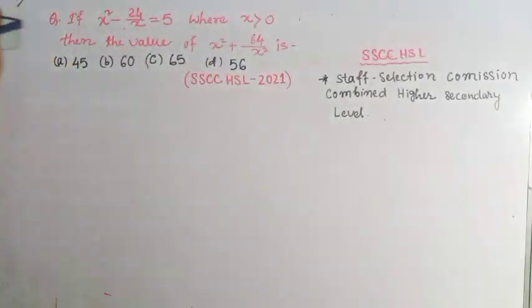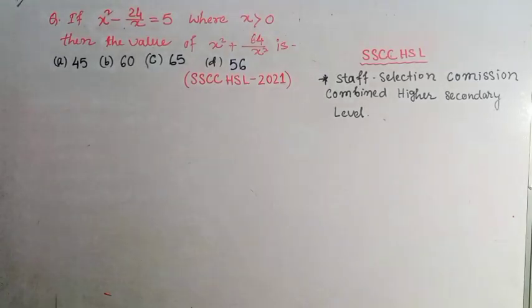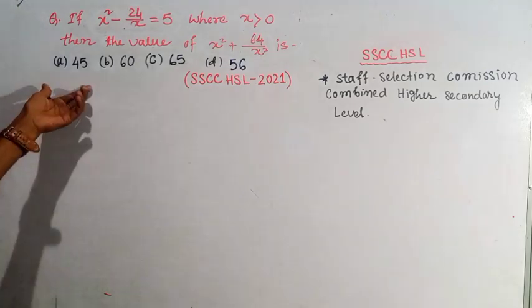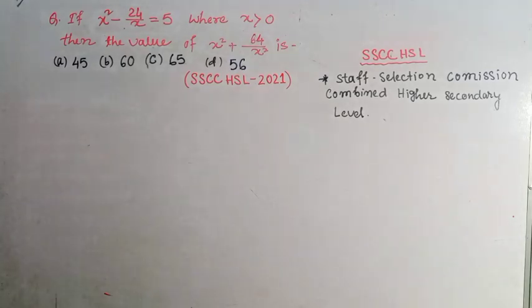So question 2 is: if x² minus 24/x equals 5, where x is greater than 0, then the value of x² plus 64/x² is? Options: A 45, B 60, C 65, and D 56.